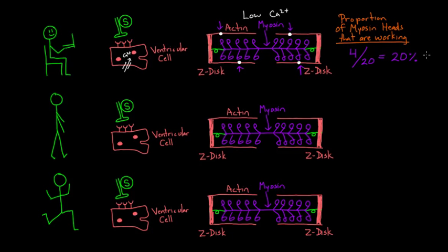These myosin heads are going to pull. These four that are working are going to pull the actin that way, and that way, and this way. And the Z-discs will come closer together. The Z-discs definitely will come together, but it's going to take a while. It's like having four of your friends pulling on a rope. It's not as effective as having 20.